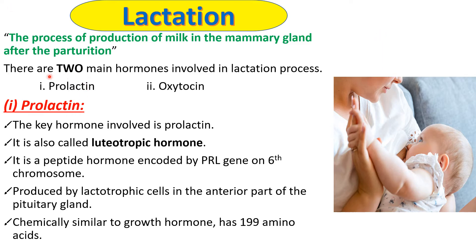There are two main hormones involved in the lactation process: one is prolactin and another one is oxytocin. Prolactin is the main hormone involved in the lactation process. Another name for prolactin is the luteotropic hormone. The gene responsible for the prolactin hormone is present on the sixth chromosome and is named PRLG.